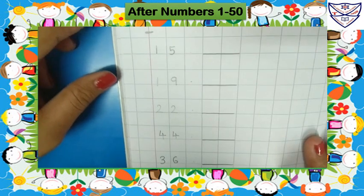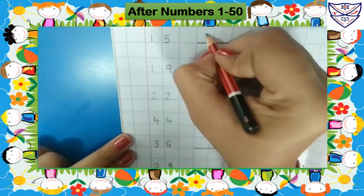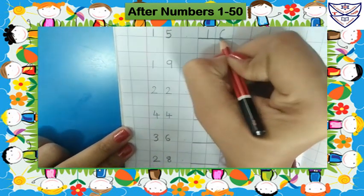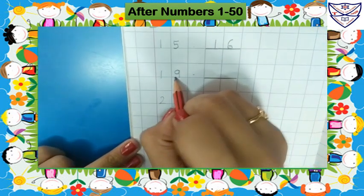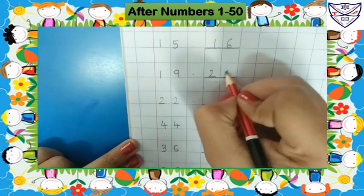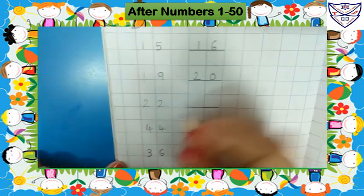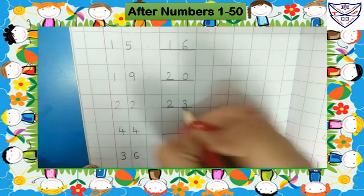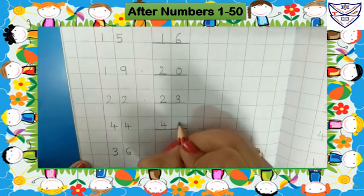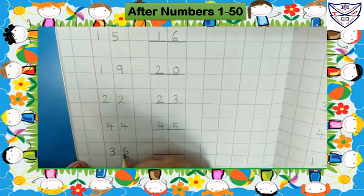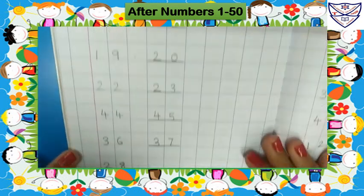What will come after 15? 16. So we will write here 16. What will come after 19? 20. So we will write here 20. What will come after 22? 23. So we will write here 23. What will come after 44? 45. So we will write here 45. What will come after 36? 37. So we will write 37.